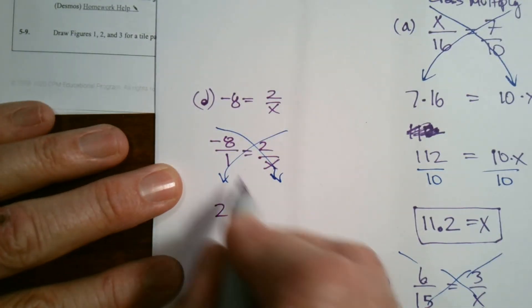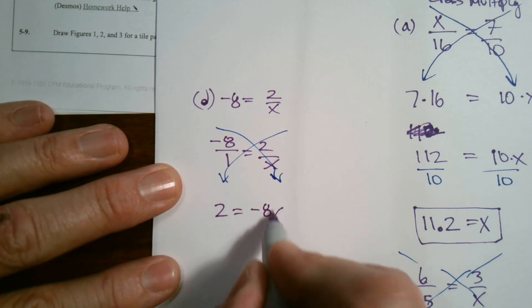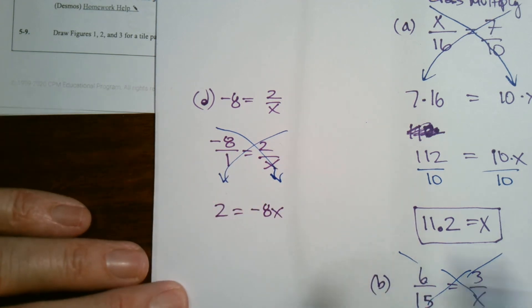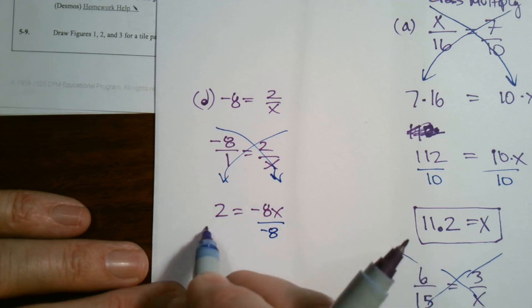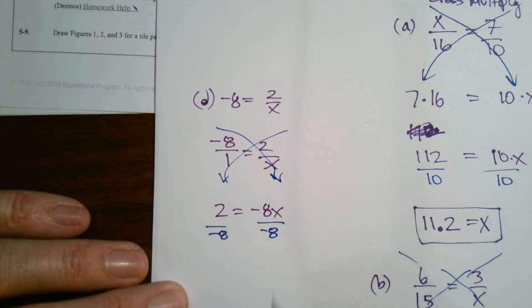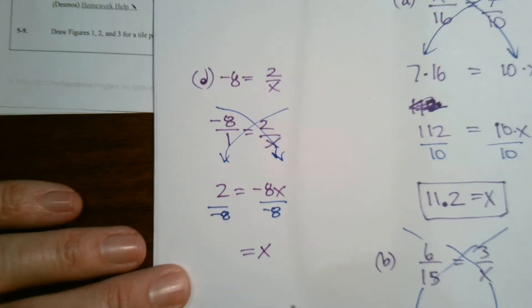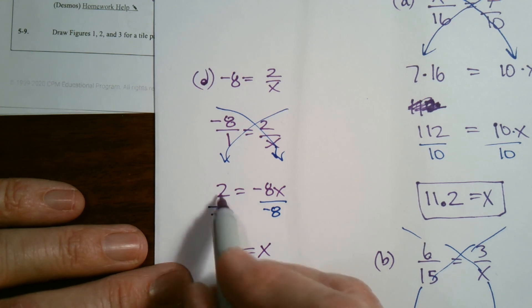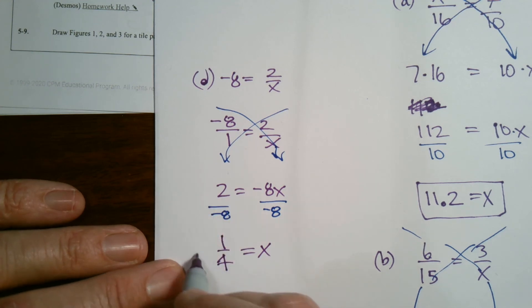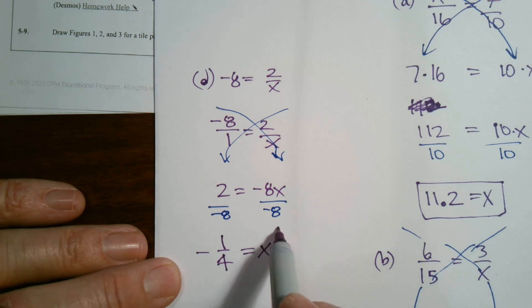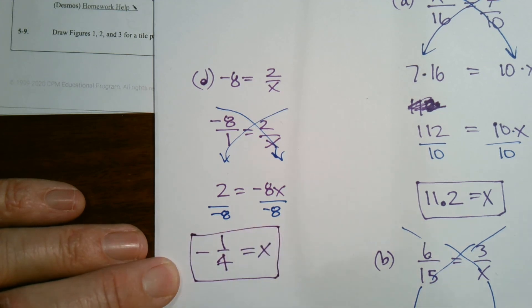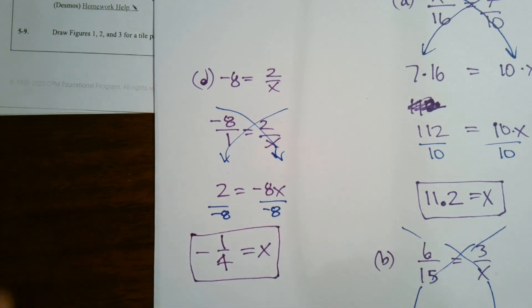All right. So two times one is two, negative eight times X is negative eight X. And then quickly we can, at that point, divide both sides by negative eight. And so X equals what? Well, two divided by eight can be simplified to be one fourth. And the whole thing is negative. So negative one fourth. All right. There you go.